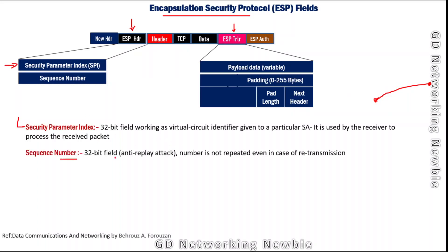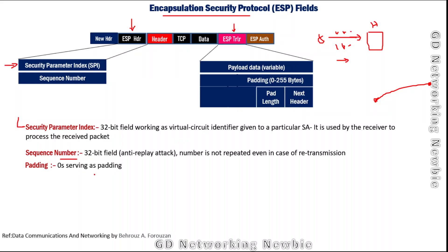The Sequence Number in ESP follows exactly the same rule as in AH — it is used for anti-replay attack protection. There are also Padding bits, which are used to complete the required number of bits for the hash function input. For example, if 10 bits are required but only 8 bits are available, 2 padding bits are added. The Pad Length field defines the length of those padding bits.